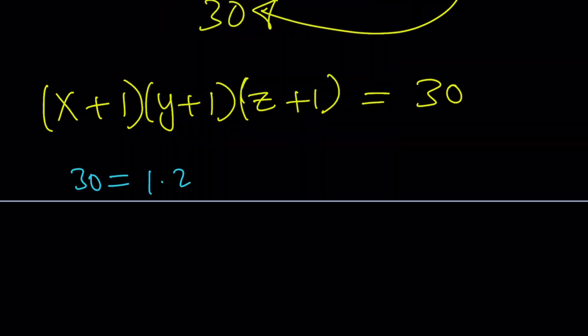Obviously. But 1 is not going to work. We can't use 1. Because if you use 1, let's say, for x + 1, then x will be 0. But that's not good because x, y, z are positive integers. They can't be 0 or negatives. Make sense? Cool.